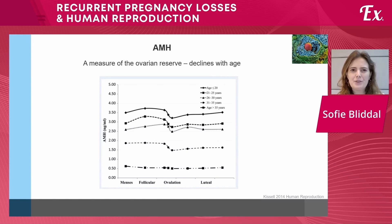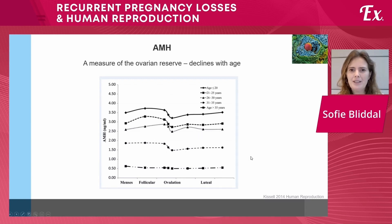AMH is a measure of the ovarian reserve and, as you very well know, it declines with age. Each line represents a different age group and the higher the age group, the lower the AMH levels are.